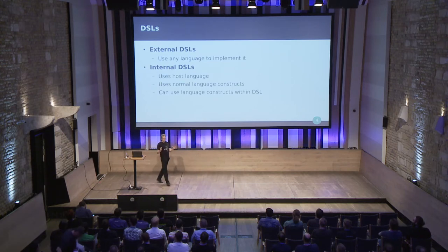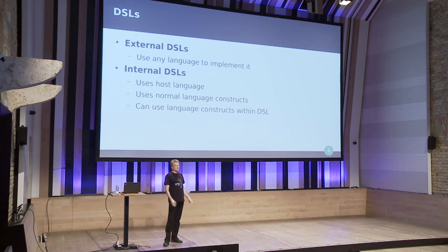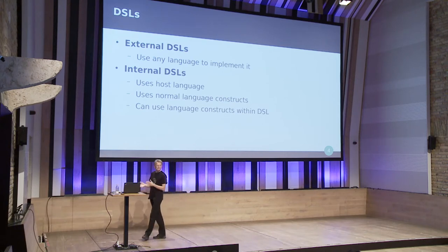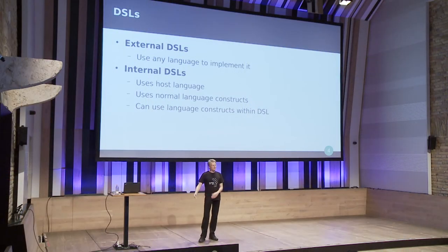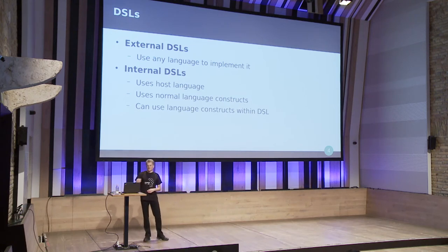There are two types of DSLs. The first is external DSLs — SQL is one example, and GraphQL would be another. You can use any language to parse and implement an external DSL. Internal DSLs, on the other hand, are specific to a host language — in our case, Kotlin. They are actually normal Kotlin code, making use of normal Kotlin concepts, and you can also use normal Kotlin code within your DSL.